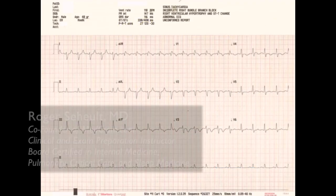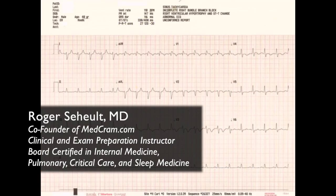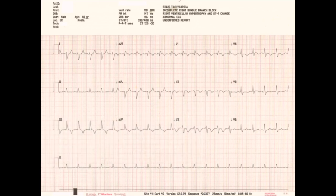Welcome to another MedCram lecture. We're going to talk about this EKG and try to get to the right diagnosis. This is a 48-year-old gentleman who presents to the emergency room with about a 24-hour onset of progressive dysrhythmia, shortness of breath, and chest pain.